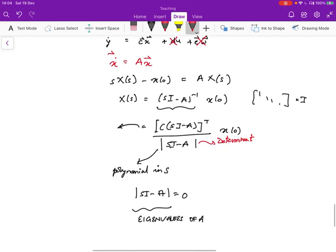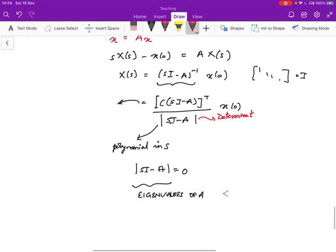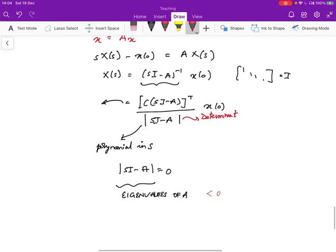And if the eigenvalues of A are all in the left half plane, and if they're complex that the real part is in the left half plane, then it turns out to be that the system is zero input stable.